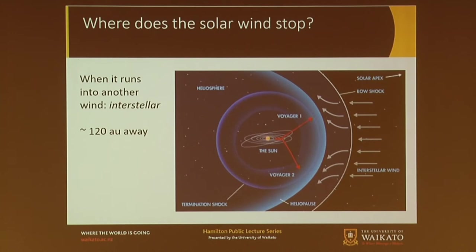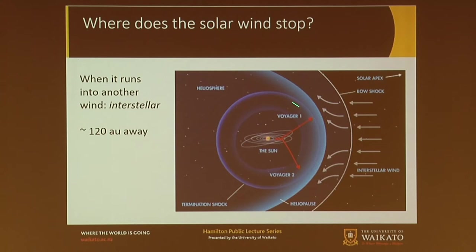Where does the solar wind stop? If it's heading out into space, what's going to stop it? The answer is: until it runs into another wind, it keeps going. That other wind comes from between all the other stars — there is an interstellar wind. The two winds smash together, reach a pressure balance, and you get a separation surface: everything inside is from the solar wind, everything outside is from interstellar space.